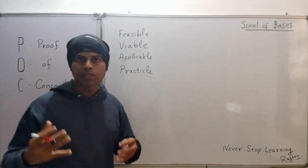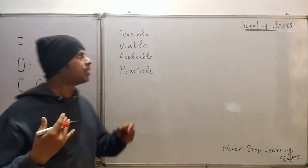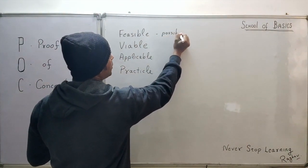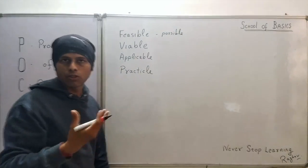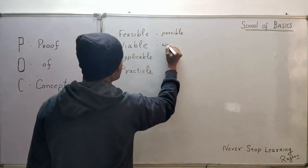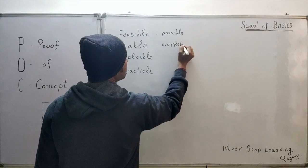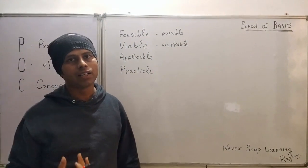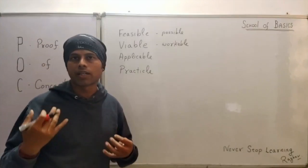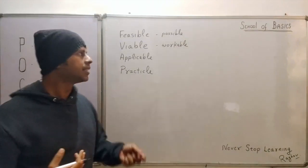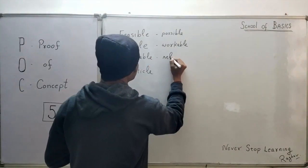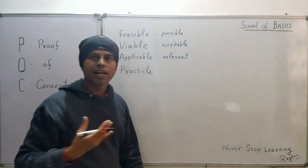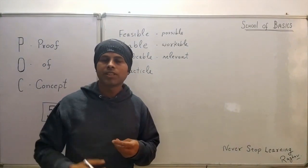These are synonymous words. When I say feasible, I mean whether it is possible — so we look at the possibility of this solution or idea. When I say viable, we talk about workability: how efficient it is, are we ready to work on this solution, how workable is the idea based on our current needs, environment, and infrastructure. Applicable relates to relevancy — how relevant it is.